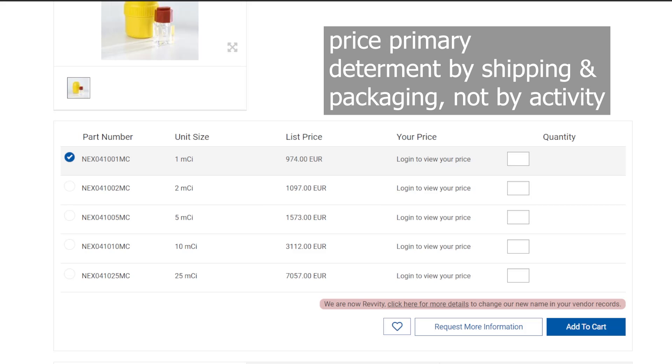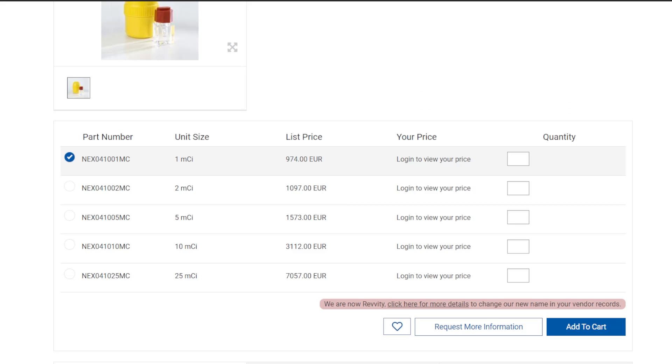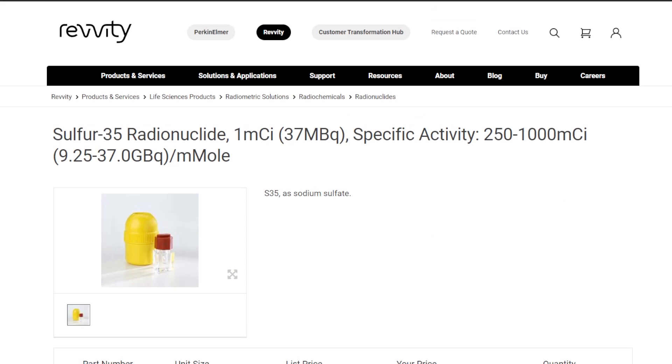There usually is a significant price jump when it comes to the activity, which then requires a different type of shipment method. However, since Sulfur-35 radiation doesn't even penetrate its own plastic container, any cardboard box is enough to fully shield even 26 MBq.